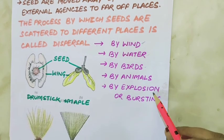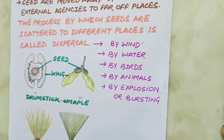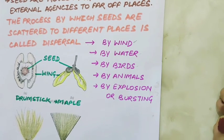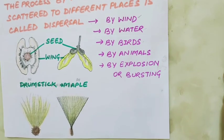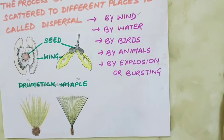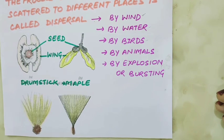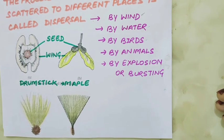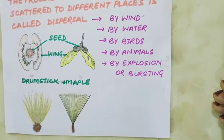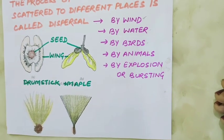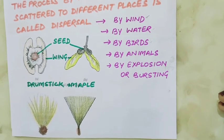Next is dispersion by explosion or bursting of fruits. Sometimes fruits mature and strain is produced in the wall, causing a sudden jerk that breaks the fruit open and allows seeds to scatter far from the parent. Due to the explosion of the fruit, seeds are thrown away with great force in all directions. For example, the castor plant bursts suddenly with a jerk and scatters seeds far from the parent. Fruit of balsam is also dispersed through the explosion mechanism.